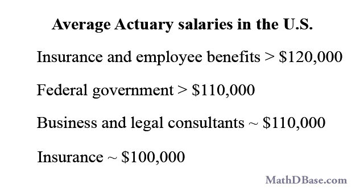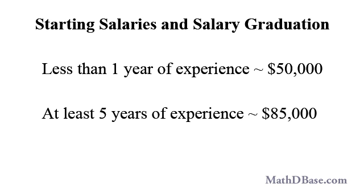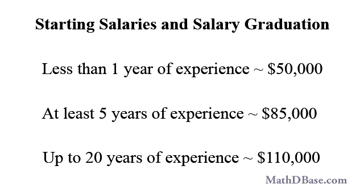Though actuaries in New York have the highest average salaries in the U.S. due to the high concentration of financial and insurance companies, those in Montana average nearly as much due to the relative scarcity of actuaries in that state. Generally, salaries are higher in larger metropolitan areas as opposed to rural. Average starting salaries for actuaries with less than one year of experience is about $50,000. Typically, salaries increase with experience and improved credentials. Actuaries with at least five years of work experience average about $85,000, and about $110,000 for experience up to 20 years.